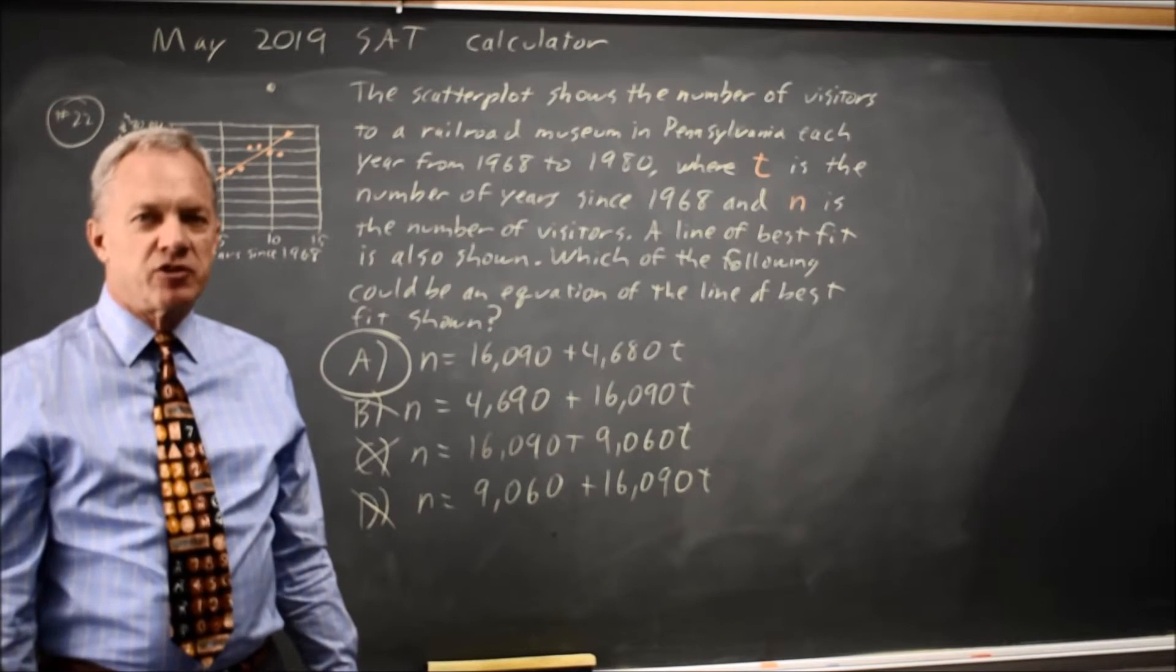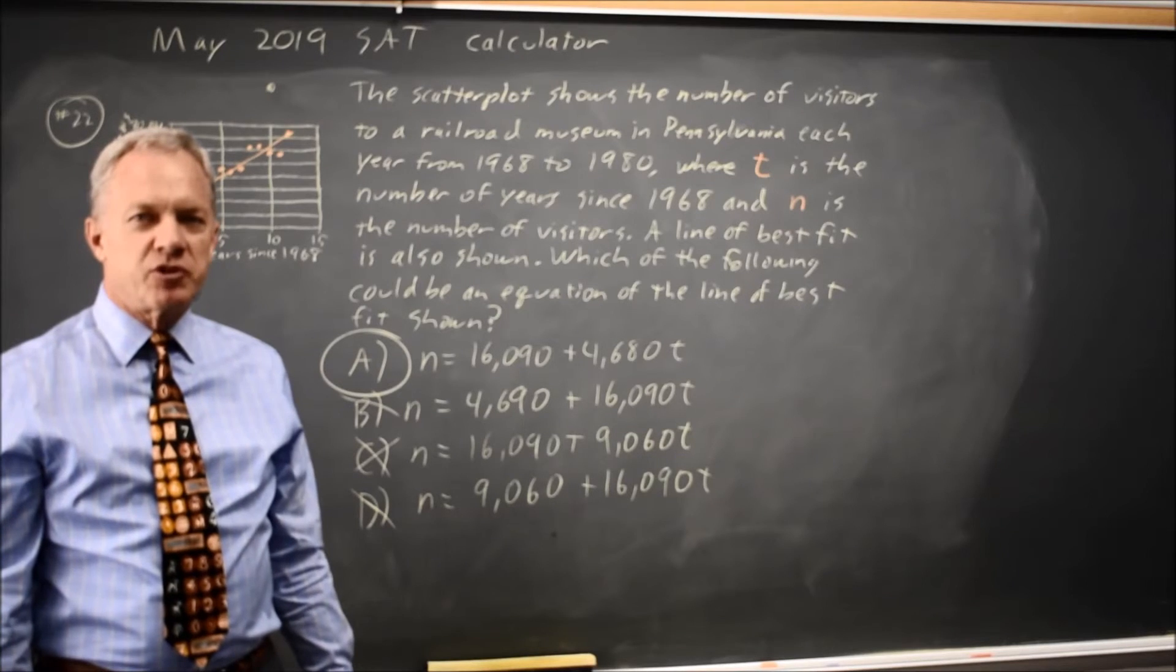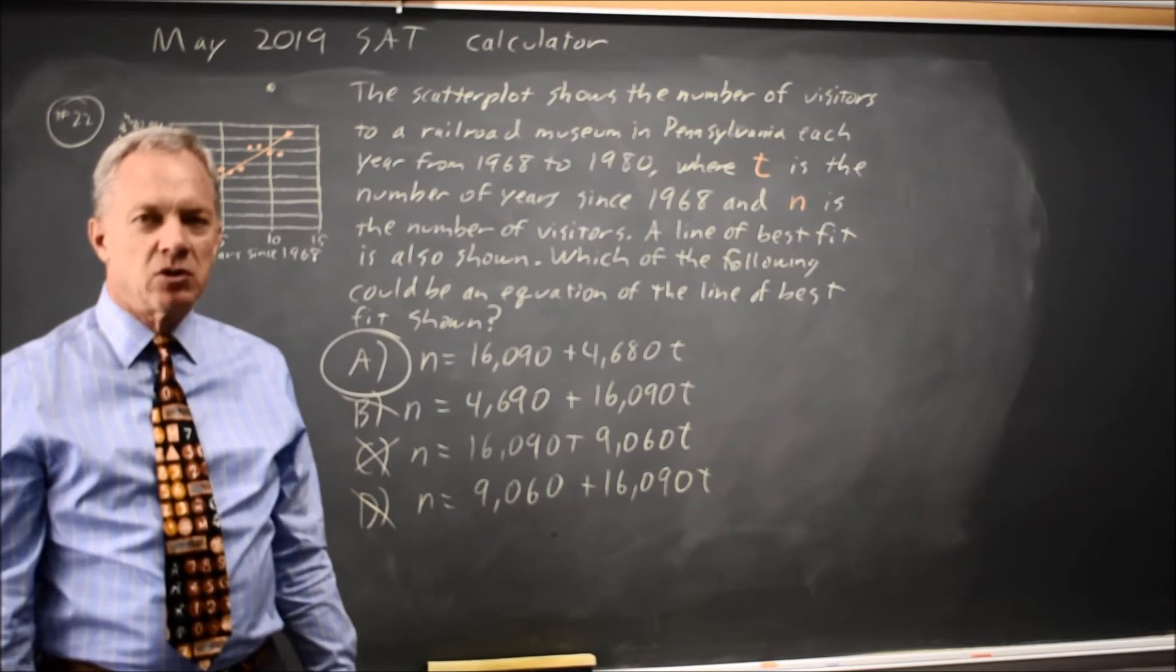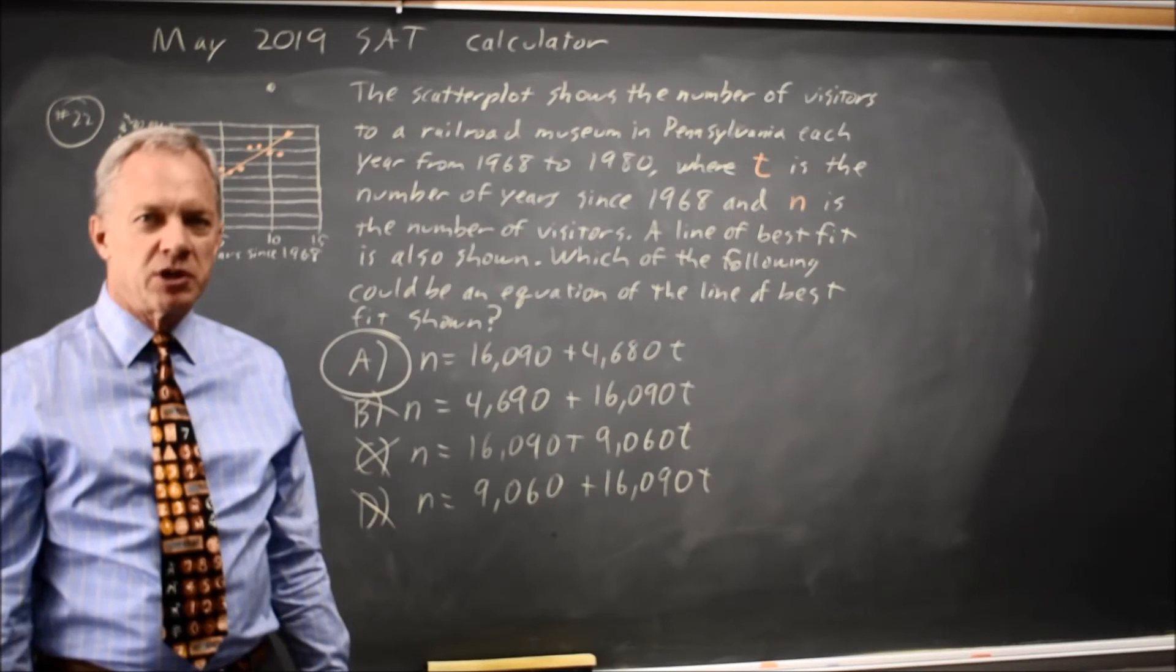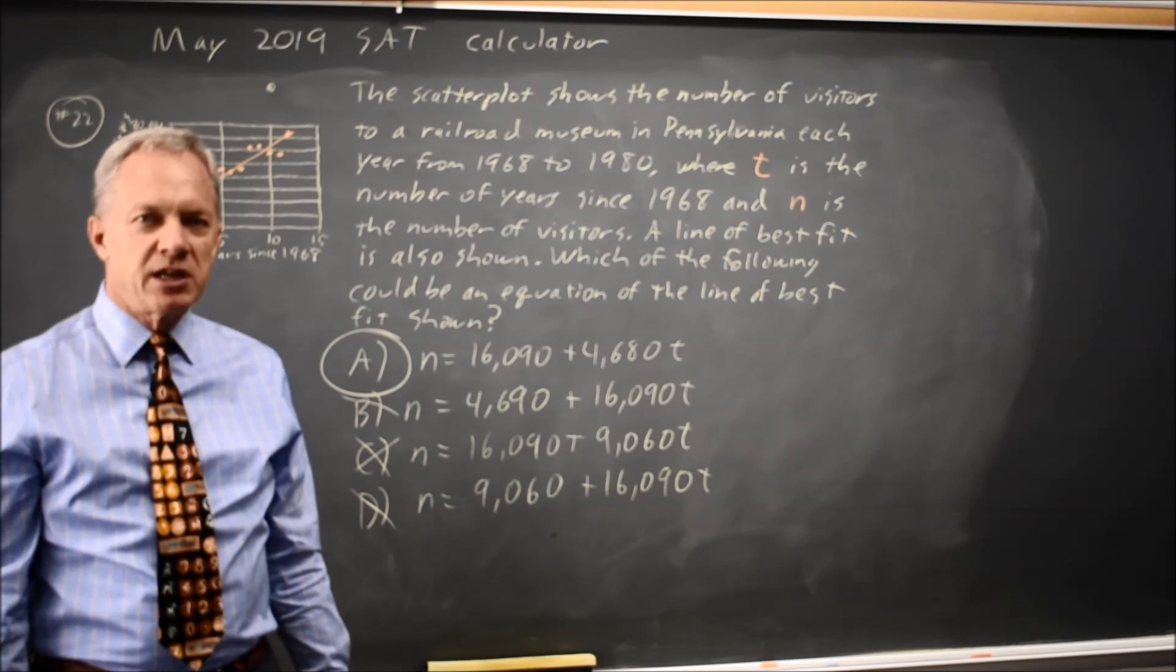College Board often asks you to find the equation for the line of best fit and the most efficient way is often to check the slope and the intercept or to just put it into your calculator and choose one that matches. Come back soon for my next video. With math there is always more.